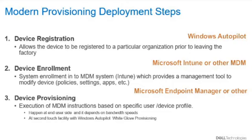If the organization has many users or a subset of users in a low-bandwidth situation, then there is an alternative called Windows Autopilot White Glove Provisioning, which is the ability to execute those profiles at a second-touch facility. The machine, the device, will be fully pre-configured prior to being shipped to the end user.